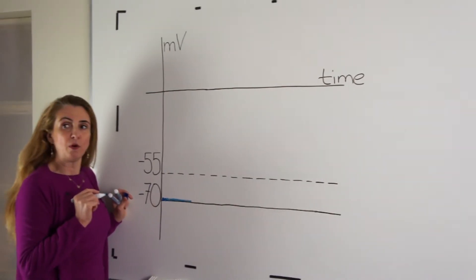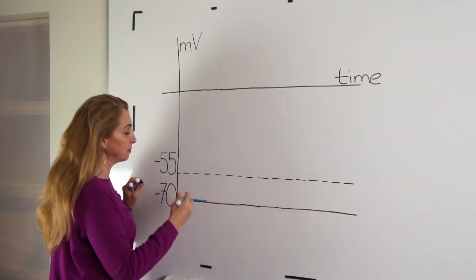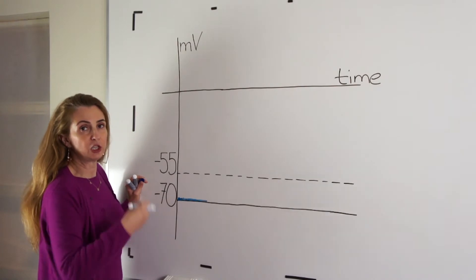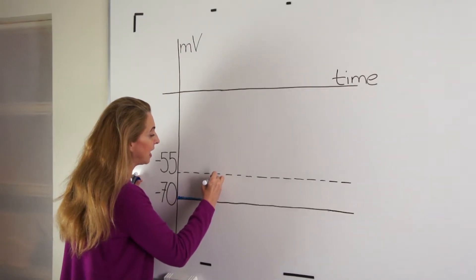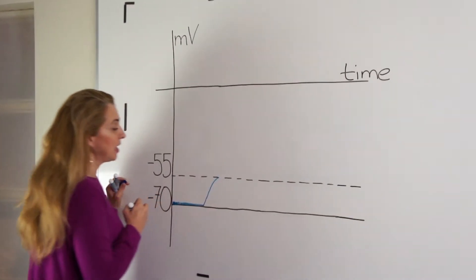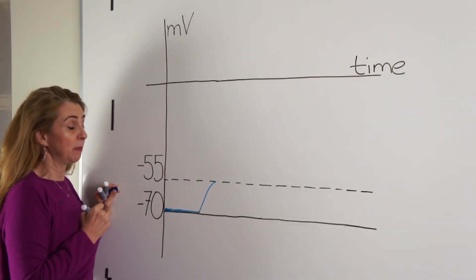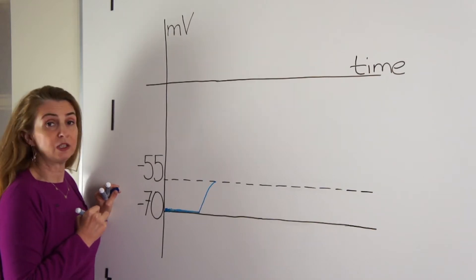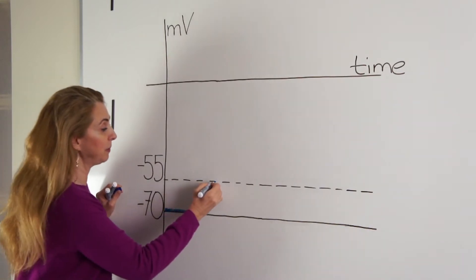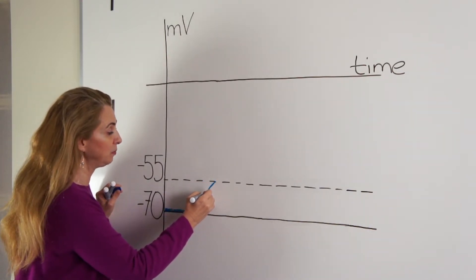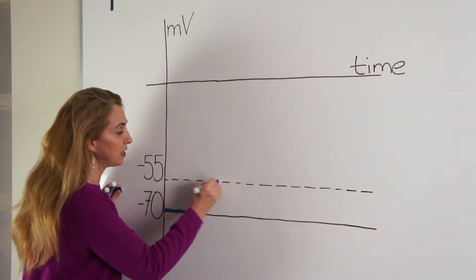Then comes a depolarization effect. This depolarization effect is caused by the opening of mechanically or ligand-gated sodium channels. Sodium moves into the cell and the cell depolarizes. If the amount of sodium ions moving into the cell is big enough, the depolarization will be big enough and the membrane potential will reach the threshold level. Here is our threshold level.